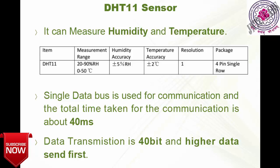The resolution is 1 and the package is a 4-pin single row. It has four pins: VCC, ground, data pin, and no connection. Basically it uses serial communication with a single data bus. The total communication time requires 40 milliseconds to transmit all the data — humidity and temperature together — and the data transmission is 40 bits, with the higher data sent first.